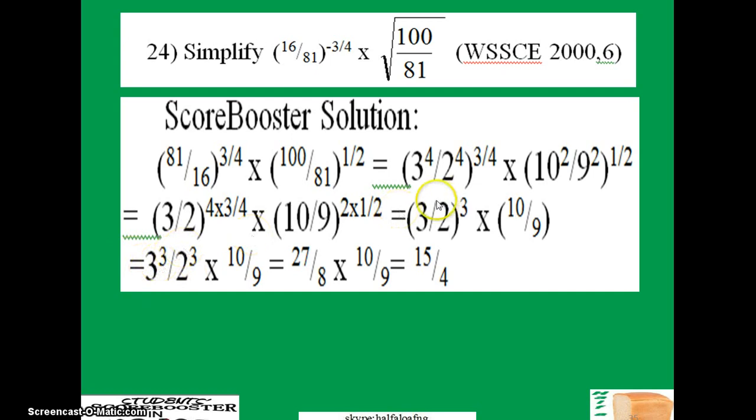We can open all the brackets to have the whole thing in this form. 3 raised to power 3 is 27, 2 raised to power 3 is 8, and you have 10/9. For the simplification, we give you 15/4.